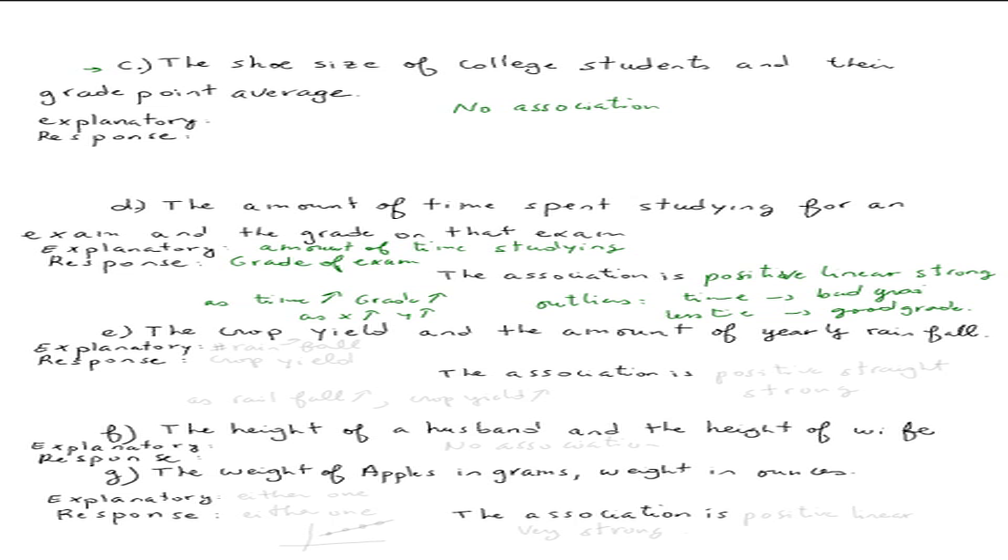Now for E, the crop yield and the amount of yearly rainfall. We're interested in the crop yield, so that would be the response. The explanatory would be amount of rainfall.